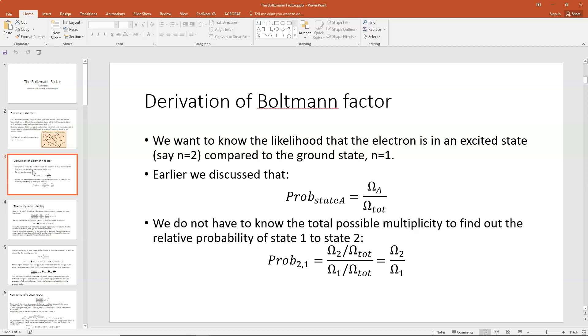Now here's the neat thing. If we want to know the probability of state 2, n=2, relative to the ground state, state 1, n=1, then what we could do is set up this equation: omega_2 divided by omega_total, divided by omega_1 divided by omega_total. The top is the probability that you're in state 2 and the bottom is the probability that you're in state 1. The ratio here means you're canceling out that omega_total. So you don't have to know the multiplicity for all possibilities. You just need to know the ratio of omega_2 to omega_1 to figure out the relative probability of state 2 with respect to 1.